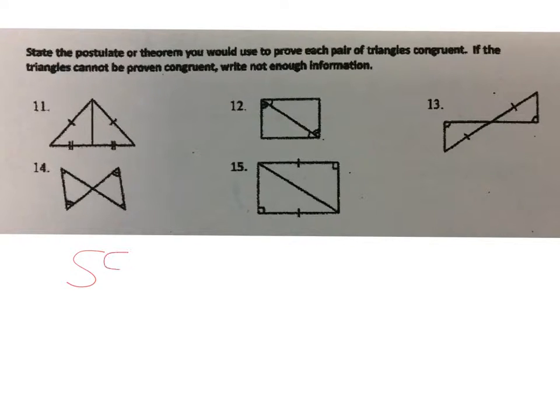We can have SSS, meaning all three sides are showing that they are congruent. We can have SAS, where one angle is in between two congruent sides. We can also have ASA, which would be an angle, then a side, then an angle.